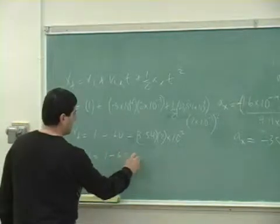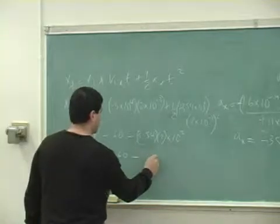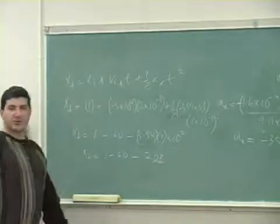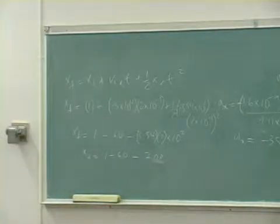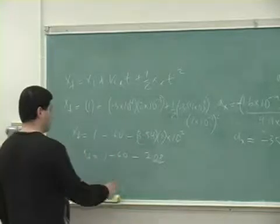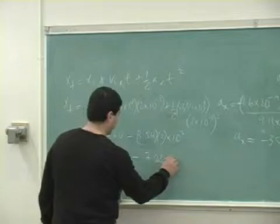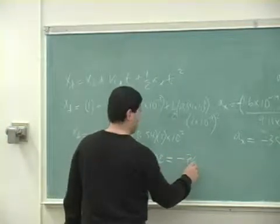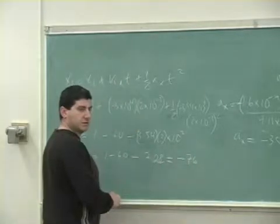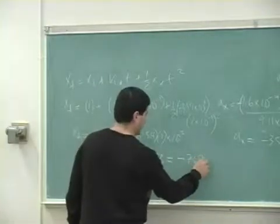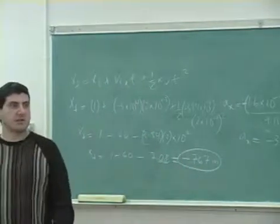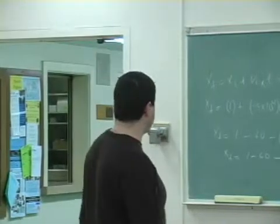So 1 minus 60 minus, this is 8, 10, 1, 7, 708. So I did that, that's going to be negative 59, negative 59 minus 708, negative 7, 60, 59 and 8 is what? 67. In already 2 milliseconds, its x position is negative 767.